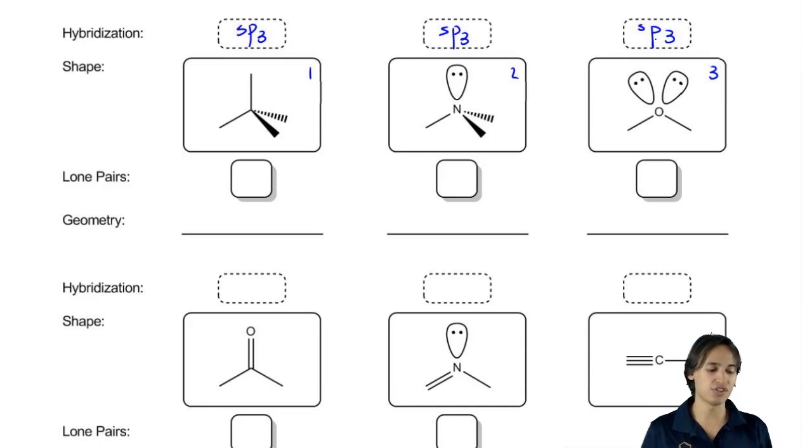So now what I want to do is enter in the amount of lone pairs that each one has. So as you can see, this first one doesn't have any lone pairs. So I'm just going to put zero. The second one has one lone pair. And the third one has two lone pairs. So I have one and two. And you can see that all these are sp3 hybridized, but they all look different.